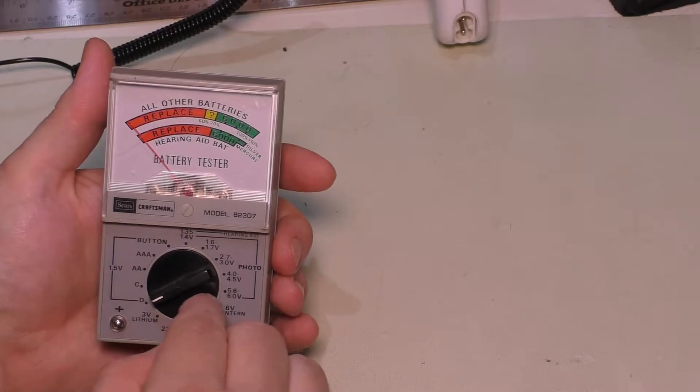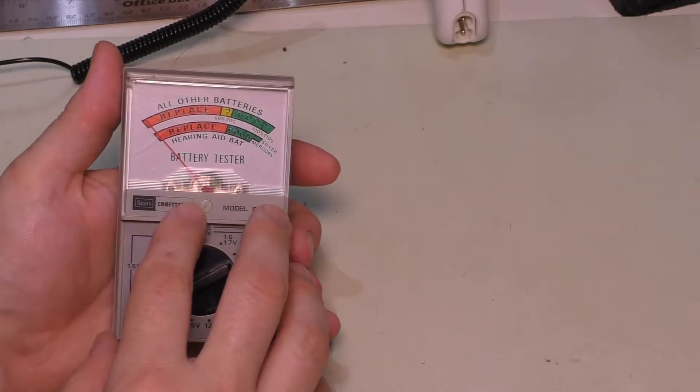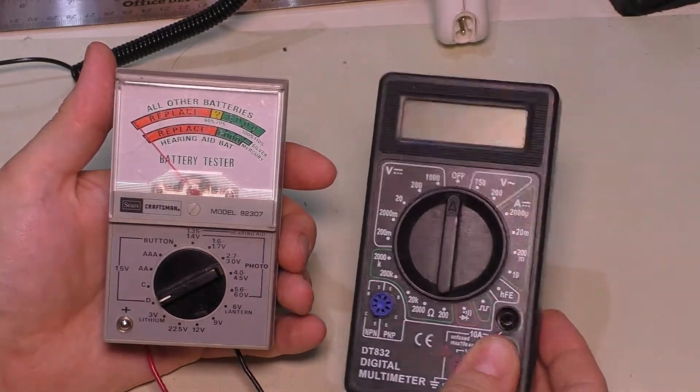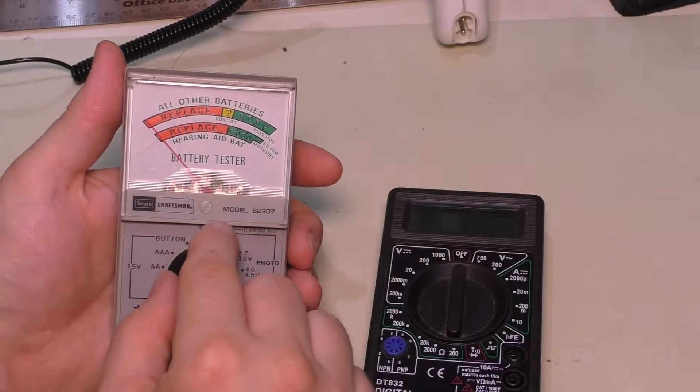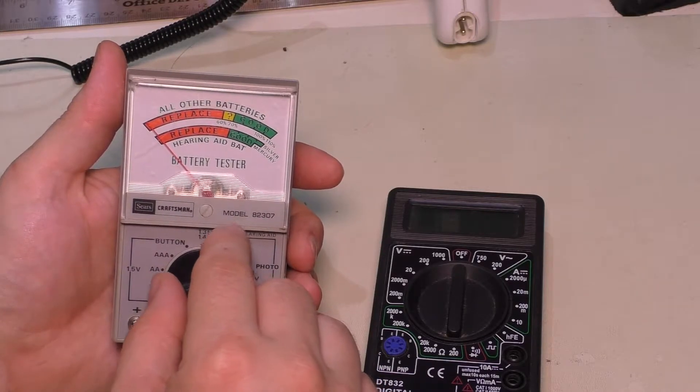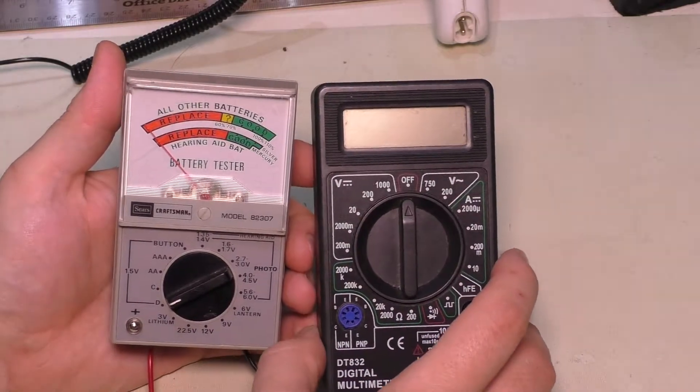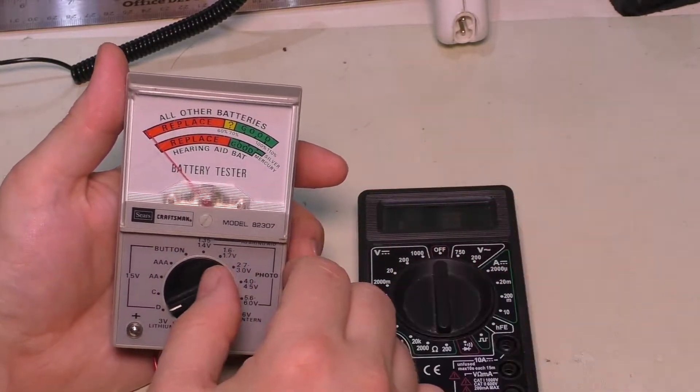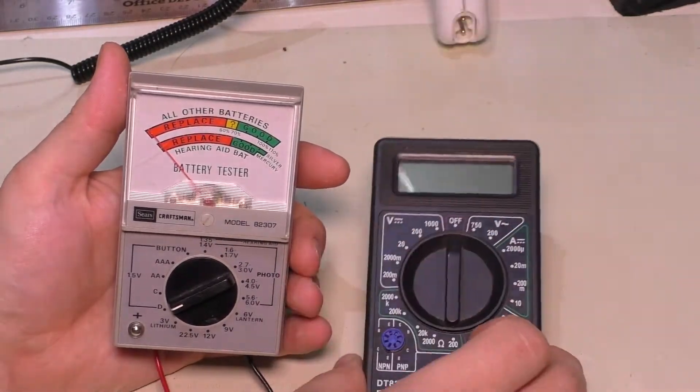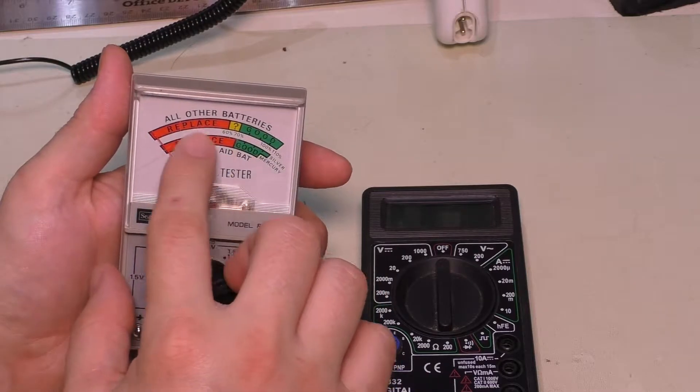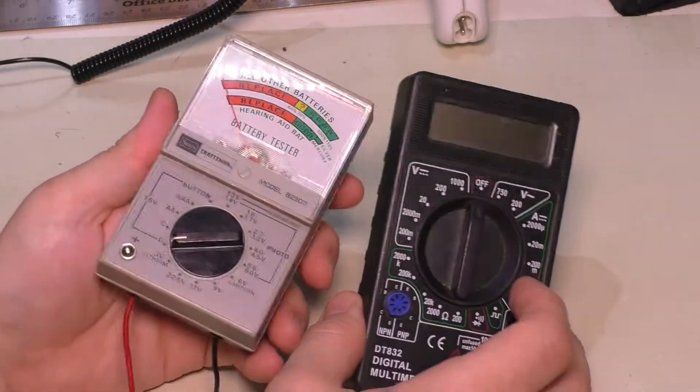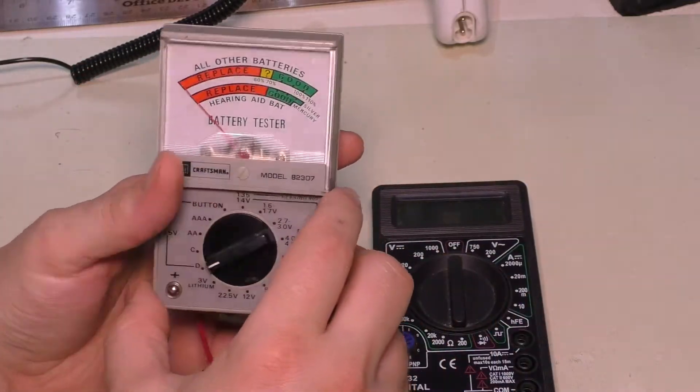The difference between a voltmeter or multimeter like one of these guys and the battery tester is the battery tester is going to place a small load on the battery to actually test the voltage correctly. This one's going to tell you that's 1.5 volts, but the minute you put it into something it's not going to work because there's no load placed on it. Really you need both if you're doing any electronics tinkering.